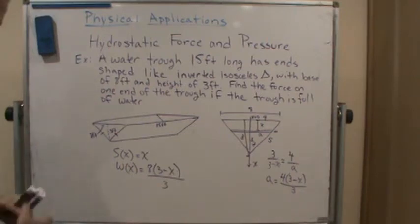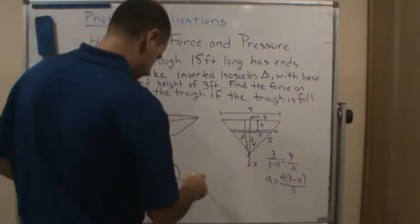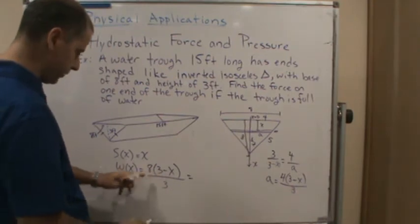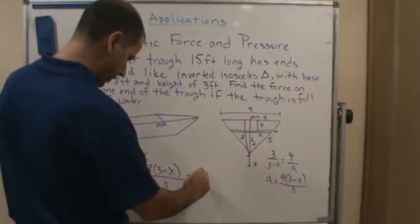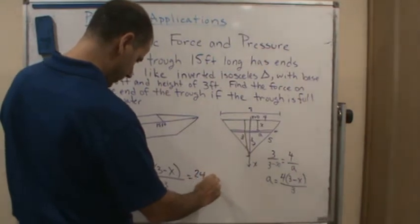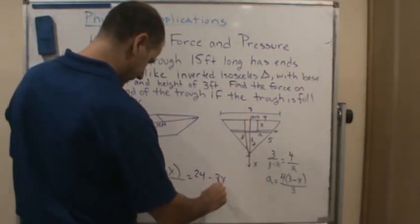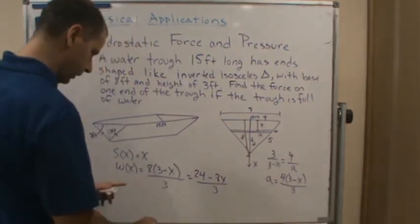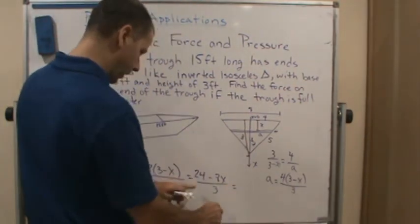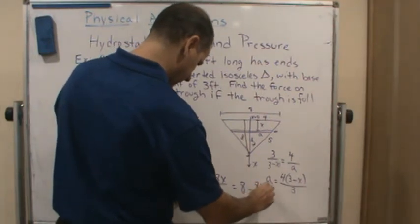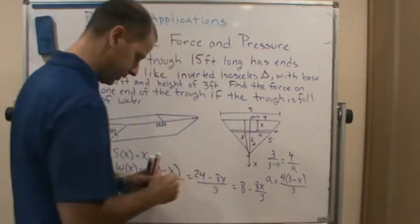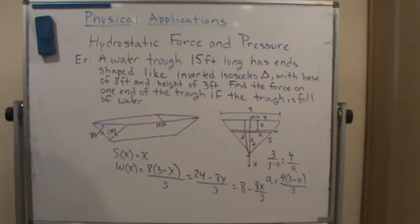double that. So let's simplify this. So I'm going to distribute the 8 and split it up into two fractions. So we get 24 minus 8x over 3, which is then going to give us what? It's going to give us 8 minus 8x over 3, and that's your width function.